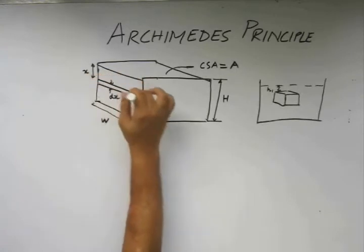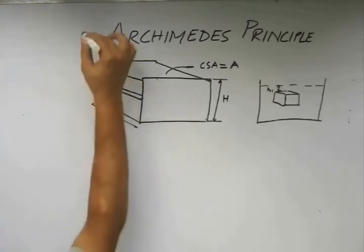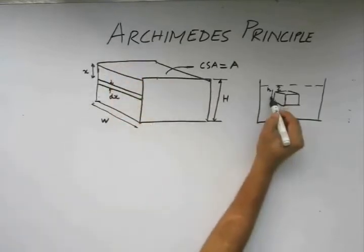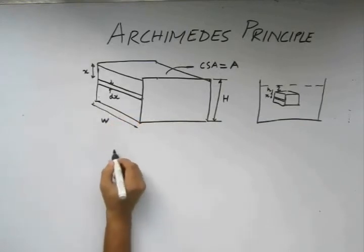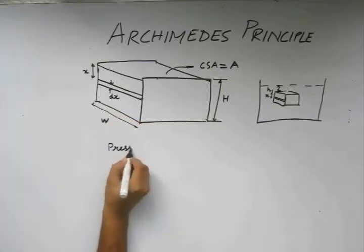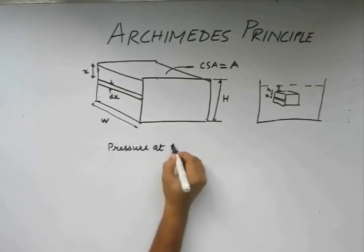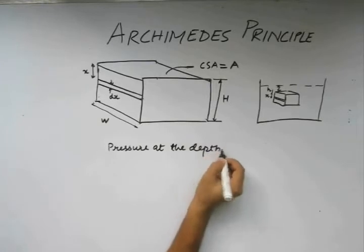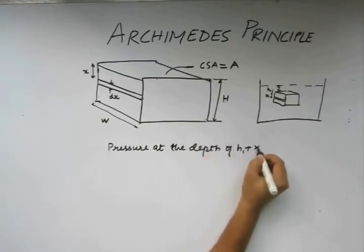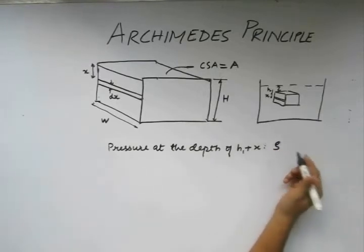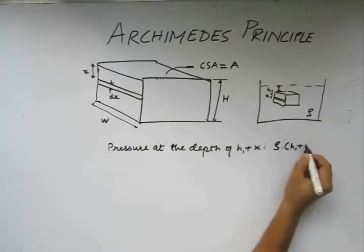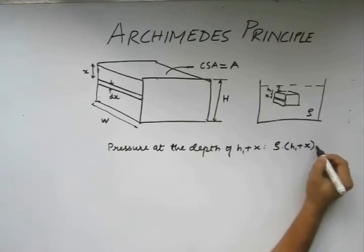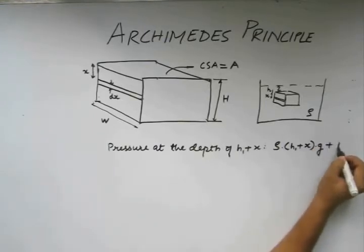The pressure acting on this small element which is at a depth of h1 plus x, let us write this here too. Pressure which is acting at h1 plus x depth is going to be the pressure at the depth of h1 plus x, which is ρ of the liquid times (h1 plus x) times g, along with the atmospheric pressure.